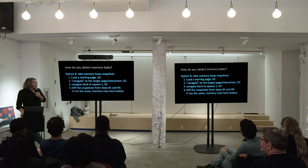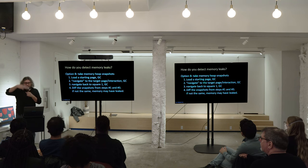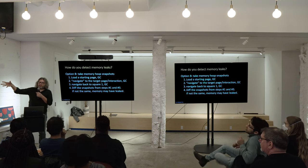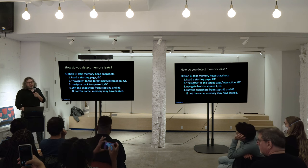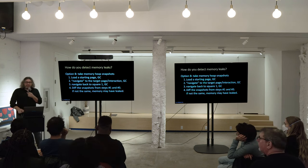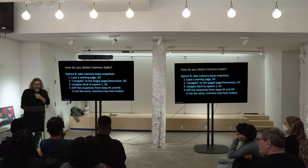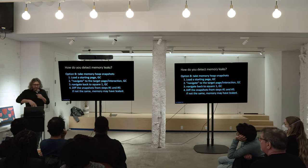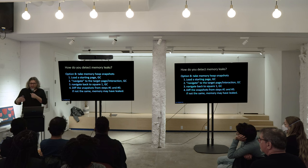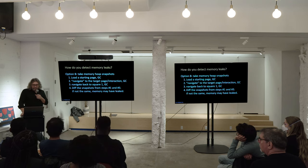Option B: do it yourself. Basically, you load a page, navigate somewhere, and then navigate back to the original state, and take snapshots every step of the way. Garbage collect before that, then diff the snapshots from when you loaded the page, the interaction, and then back to the state. And if the memory — the size of the heap snapshot — is different, then we may have a problem.